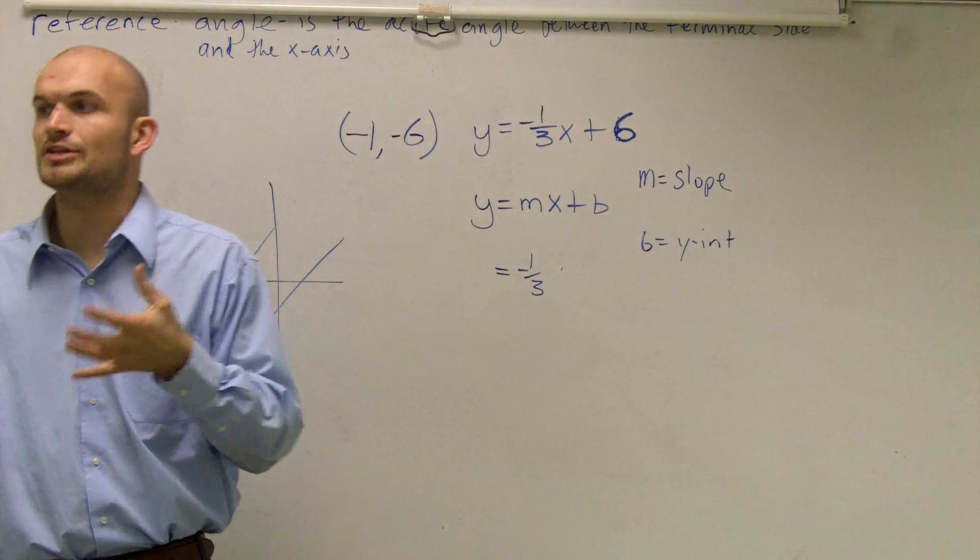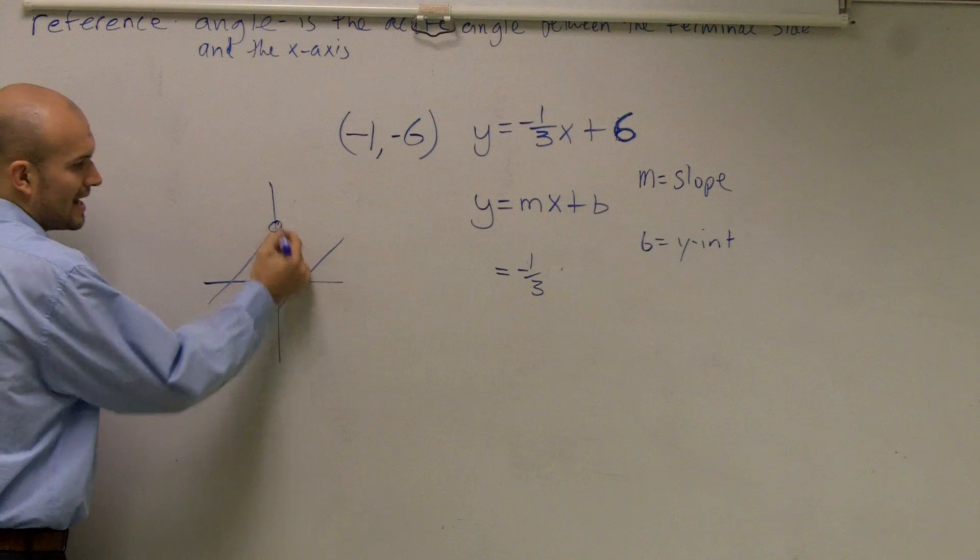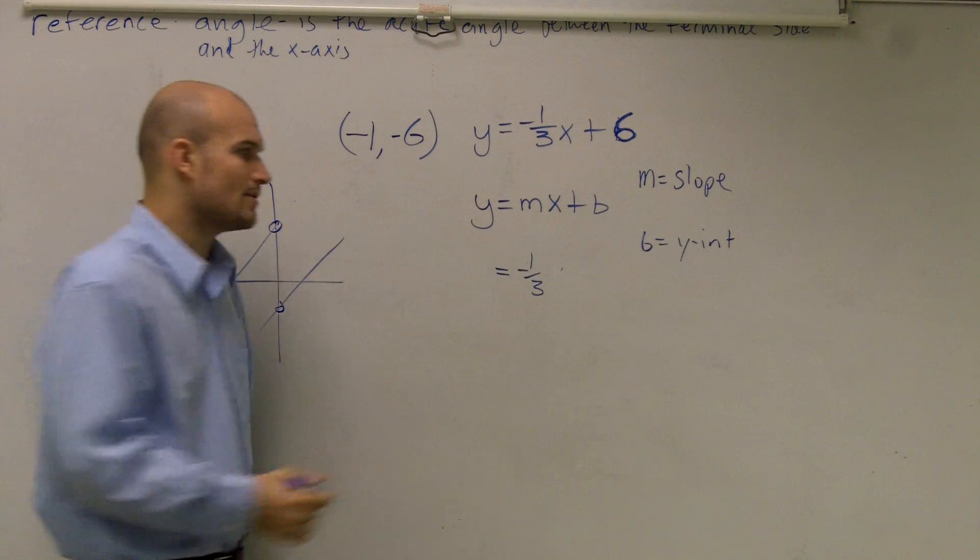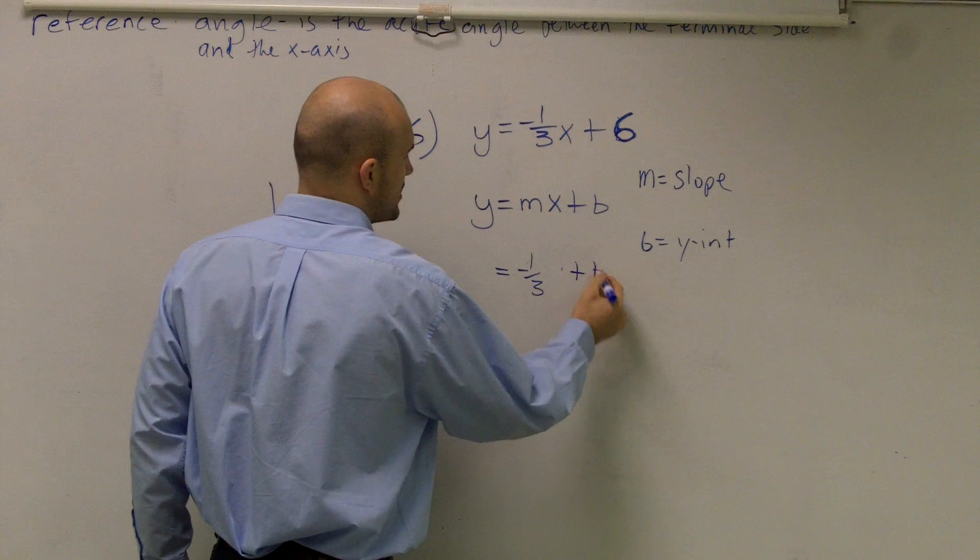But remember, we're trying to find a new line, a parallel line. Parallel lines don't have the same Y-intercept. So therefore, we do not know what the Y-intercept is. So I'm going to put plus B.